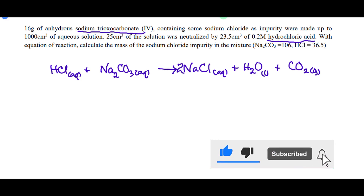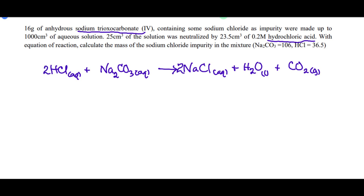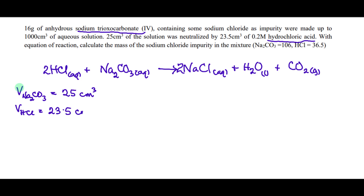Balancing the equation, the coefficient of HCl becomes 2, and NaCl becomes 2. We now write out the given parameters: volume of Na₂CO₃ (base) that reacted = 25 cm³; volume of HCl (acid) = 23.5 cm³.